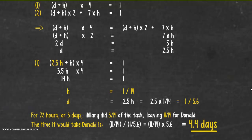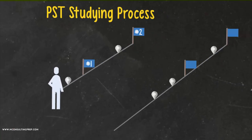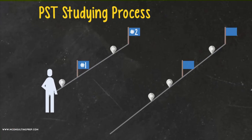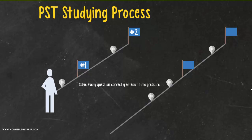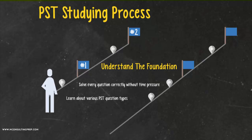Remember that there are two phases in a perfect PST studying process. The first phase is to be able to solve each and every question correctly without time pressure. The goal of this is to understand the principal foundation, which is why we break the test down into various question types. Of course, we will go over many other techniques, tips, and shortcuts to raise your speed — but that's in the second phase. For now, let's focus on the foundation.